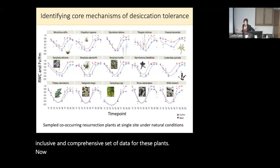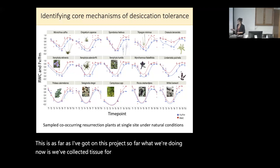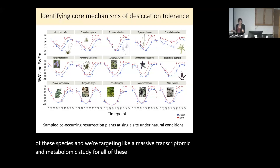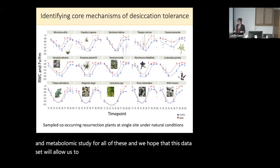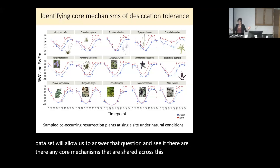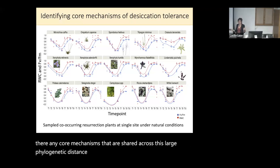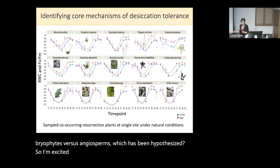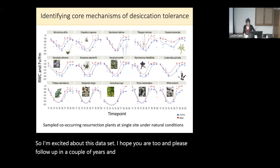This is as far as I've got on this project so far. We've collected tissue for each of these time points in each of these species, and we're targeting a massive transcriptomic and metabolomic study for all of them. We hope this dataset will allow us to answer whether there are core mechanisms shared across this large phylogenetic distance, or whether we see different mechanisms in bryophytes versus angiosperms, which has been hypothesized. Please follow up in a couple of years and see what we find.